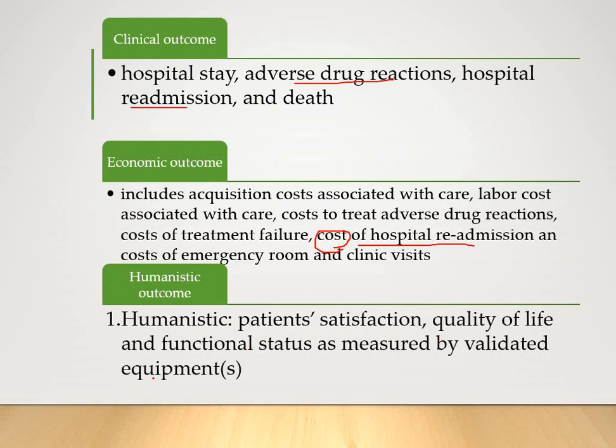The humanistic outcome, as the name indicates, is related to humanity — specifically patient satisfaction and patient quality of life. For example, consider an epileptic patient with a high number of seizures being controlled with classical antiepileptic drugs. These classical antiepileptic drugs have unwanted effects like drowsiness and may prevent the patient from engaging in productive life, so the patient's quality of life is affected at the cost of the drug being used.